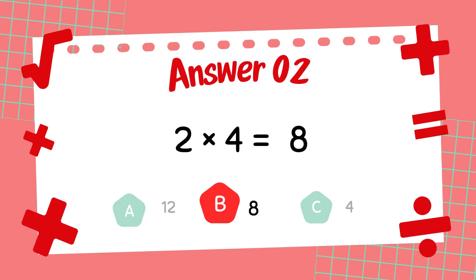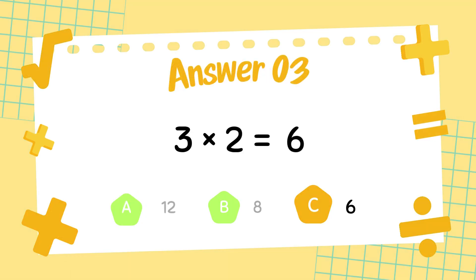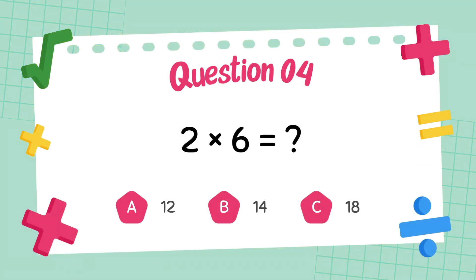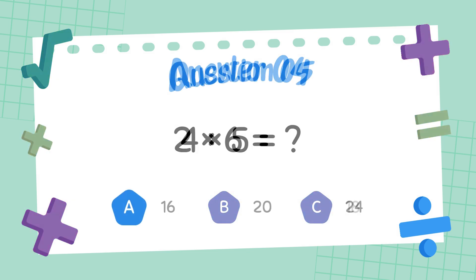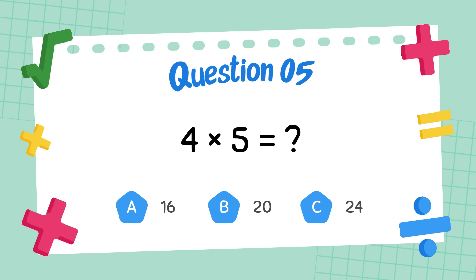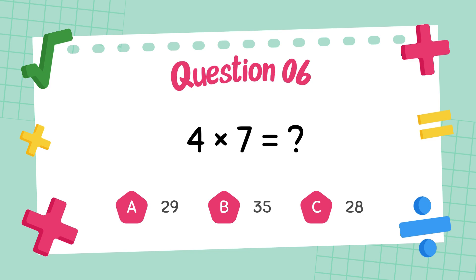The answer is 8. What is 3 times 2? The answer is 6. What is 2 times 6? The answer is 12. What is 4 times 5? The answer is 20. What is 4 times 7?